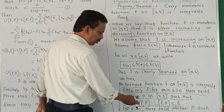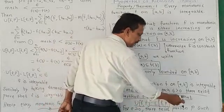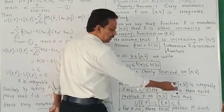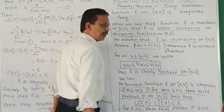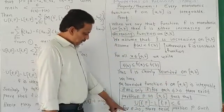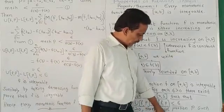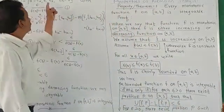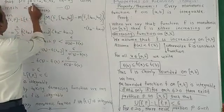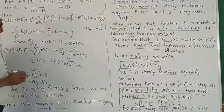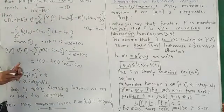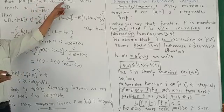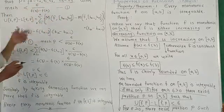We have to show that U(f,P) minus L(f,P) < ε, and if we have shown this then we argue the function is integrable. Therefore, for ε > 0, we consider a partition P equal to {t₀, t₁, t₂, ..., tₙ} with mesh of P less than ε divided by (f(b) minus f(a)).